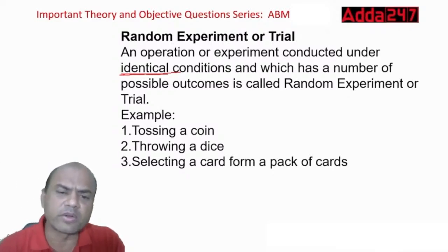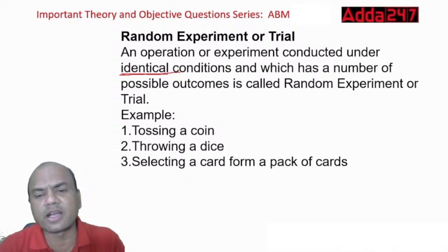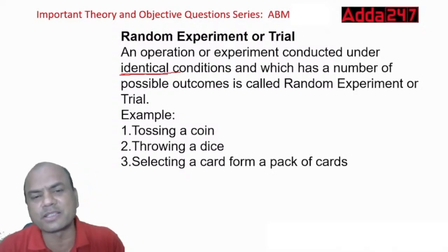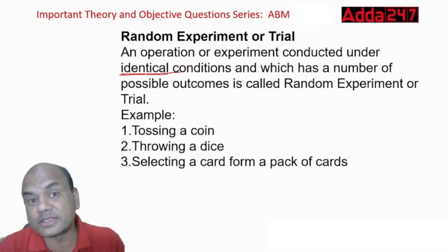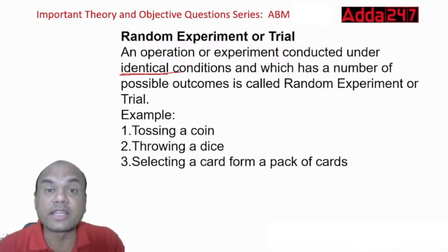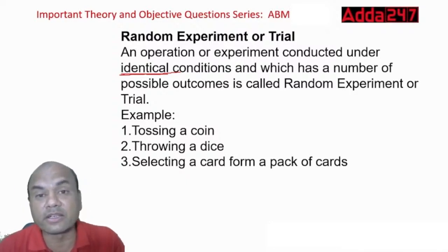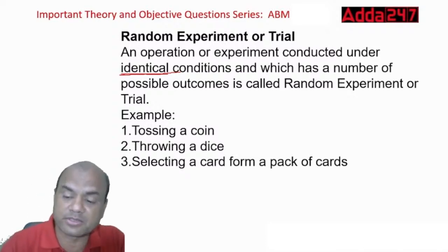Bookish examples include tossing a coin, throwing a dice, or selecting a card from a pack. The latest real-world examples are designing a COVID vaccine and designing Chandrayaan — these are all random experiments with multiple possible outcomes.